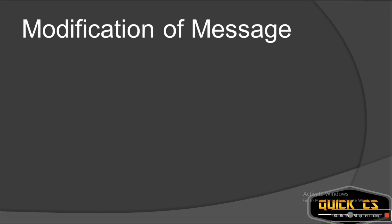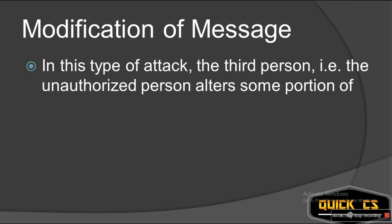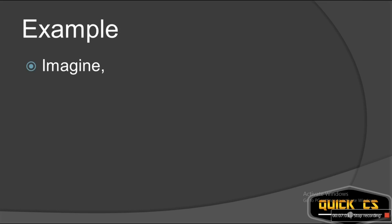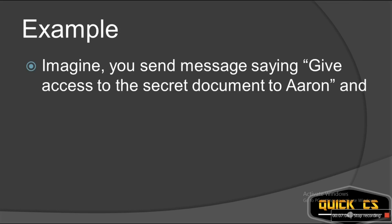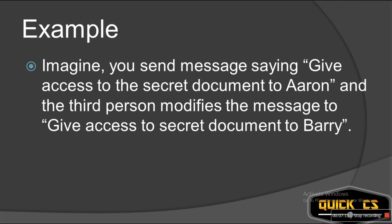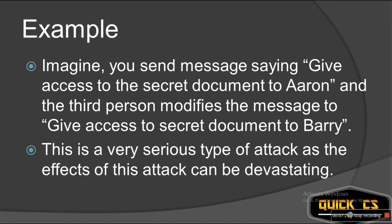Modification of message is the third type, and by far it is the most dangerous type of active attack. In this type of attack, the third person — the unauthorized person — alters some portion of the original message and sends it to the receiver to produce an unauthorized effect. For example, imagine you send a message saying 'give the secret document to Aaron,' and the third person modifies it to 'give access to secret document to Barry,' changing the name from Aaron to Barry. This is a very serious type of attack as the effects can be devastating.